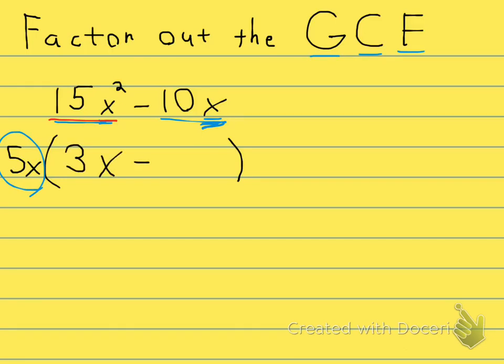3x minus. And looking at the second term, what's left after I divide out the 5x? Just a 2, not an x, because I've already taken that x out.